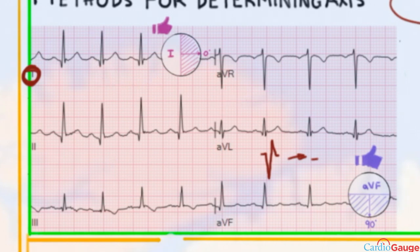Anyway, you look at lead one. And if it's positive, that's a thumbs up. So up, thumbs up, positive. And that tells you that on the circle that I showed above, that the axis, if one is positive, then you know, the axis is on this side of the circle.